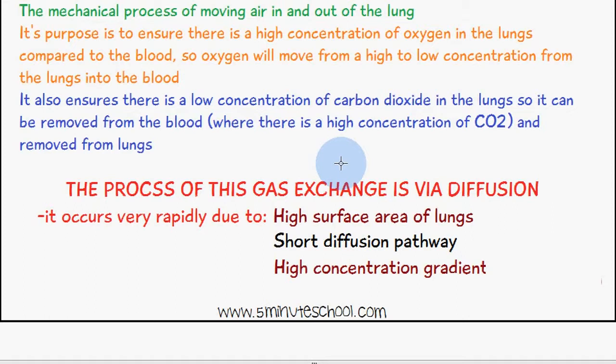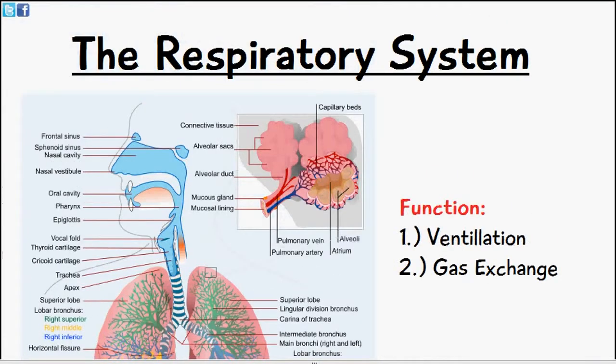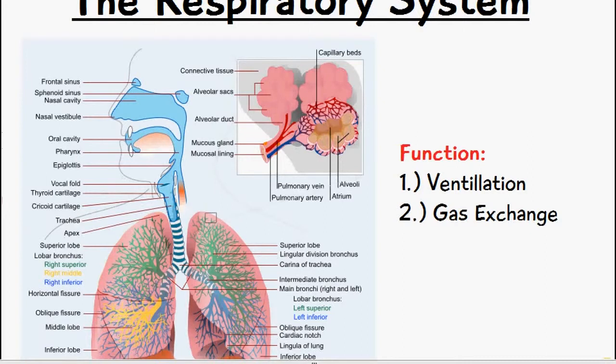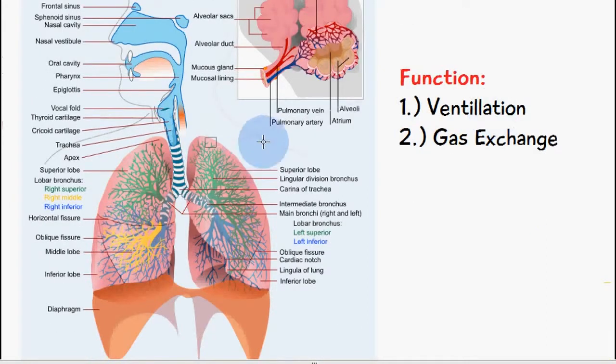It occurs very rapidly due to a high surface area of the lungs, a very short diffusion pathway, and a high concentration gradient. I hope that you find this video useful. It was just a very quick video today, briefly introducing you to the respiratory system, and the videos following on from this will include more information about the alveoli, this capillary bed which you can see in this image here. Thank you very much for watching and I hope this video was useful.